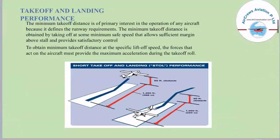The minimum takeoff distance is of primary interest in the operation of any aircraft because it defines the runway requirements. The minimum takeoff distance is obtained by taking off at some minimum safe speed that allows sufficient margin above stall and provides satisfactory control. To obtain minimum takeoff distance at a specific lift-off speed, the forces acting on the aircraft must provide the maximum acceleration during the takeoff roll. Here we can see the short takeoff and landing performance of an aircraft on a small runway.